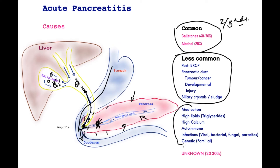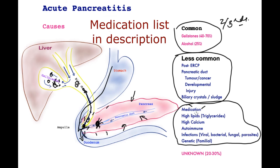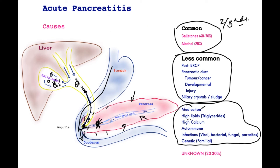Other causes have a more general effect on the body and may implicate the pancreas indirectly. Certain types of medication may set off pancreatitis, such as steroids and antidiuretics — the list is long. High levels of lipids in the blood, such as high triglyceridemia, beyond a certain range may trigger pancreatitis. High levels of calcium, autoimmune pancreatitis — where the body's own immune cells attack the pancreas — and certain infections, commonly viruses, may cause the same problem.